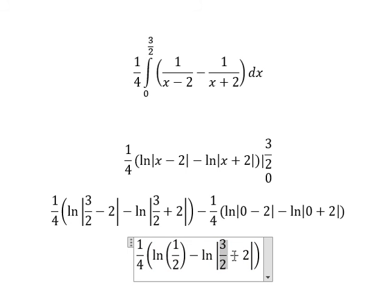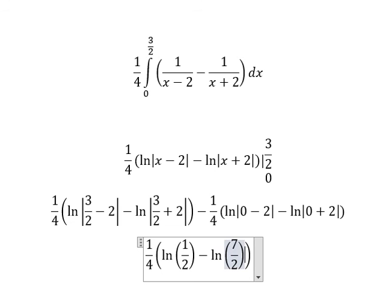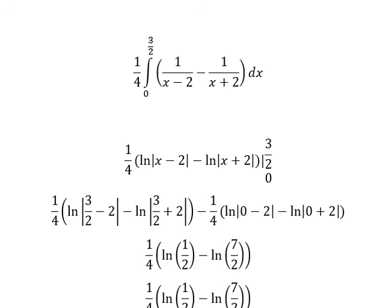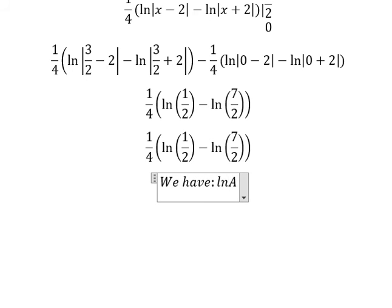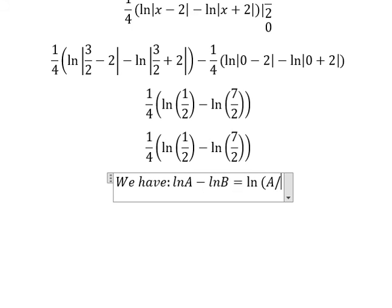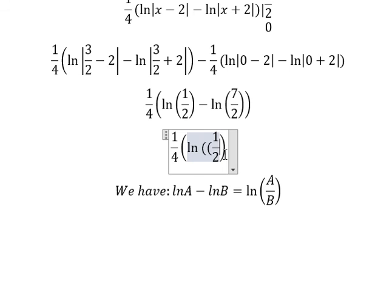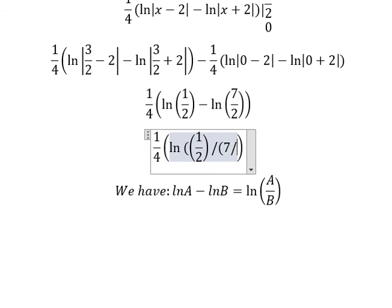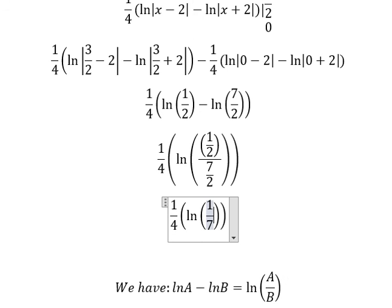And ln of 7 over 2. We can apply the formula: ln A minus ln B equals ln(A over B). If we apply this, we get ln of (1/2) divided by (7/2). Now if we simplify, we get ln of 1 over 7. And this is the final answer.